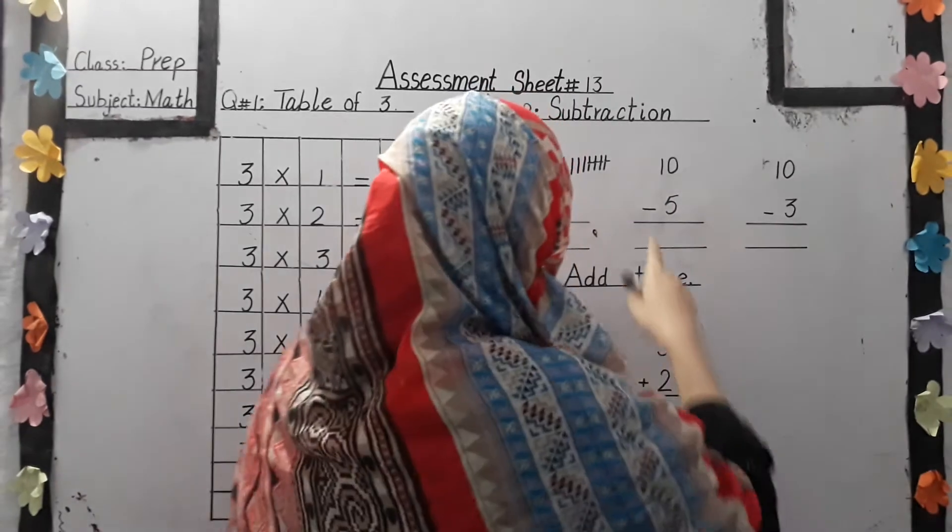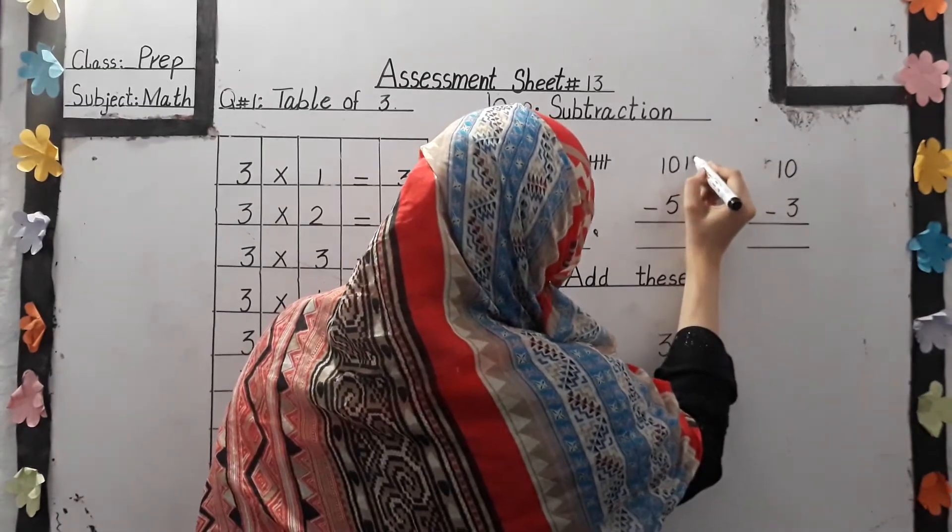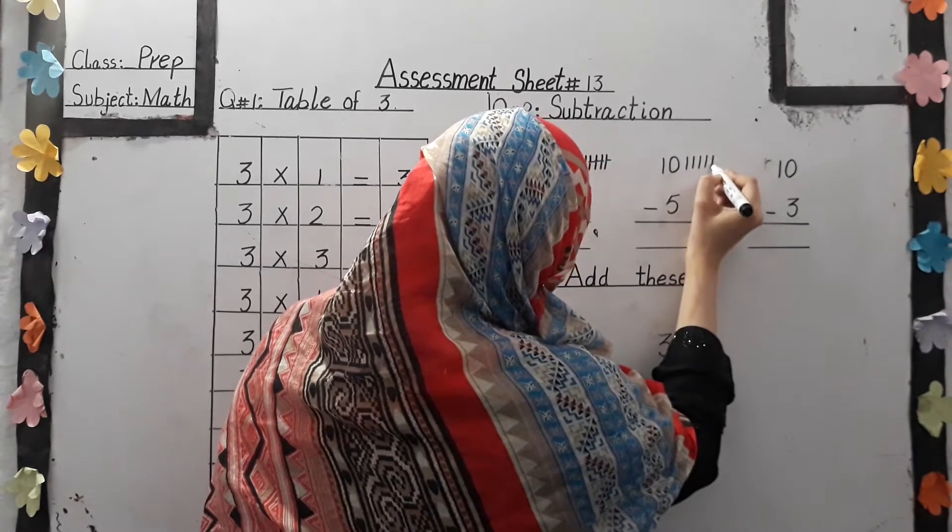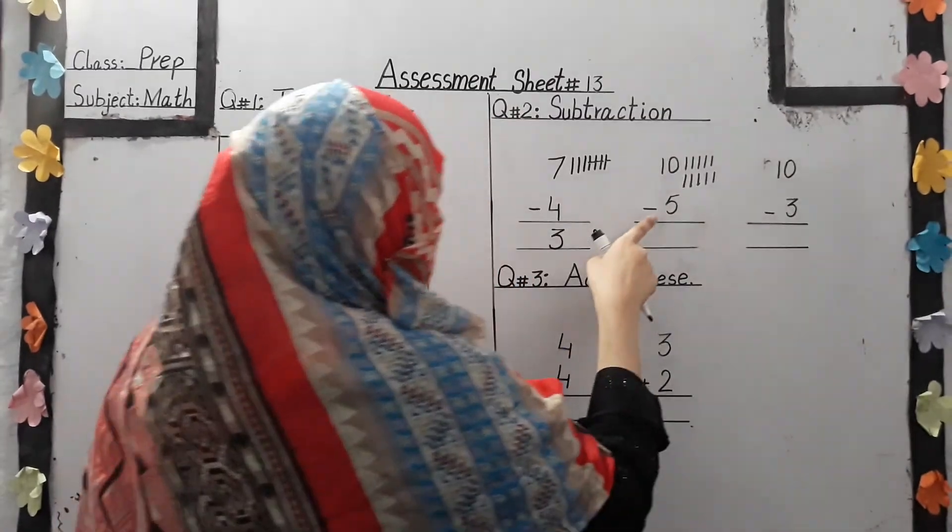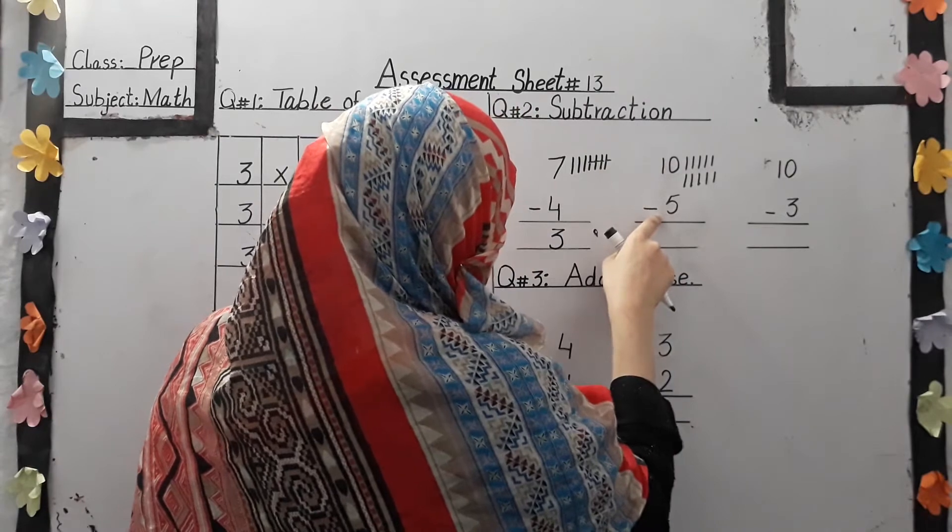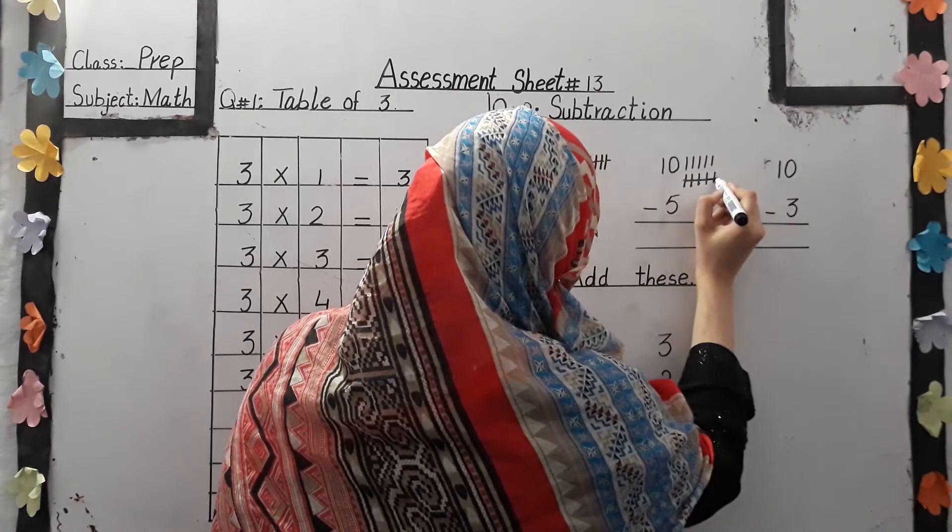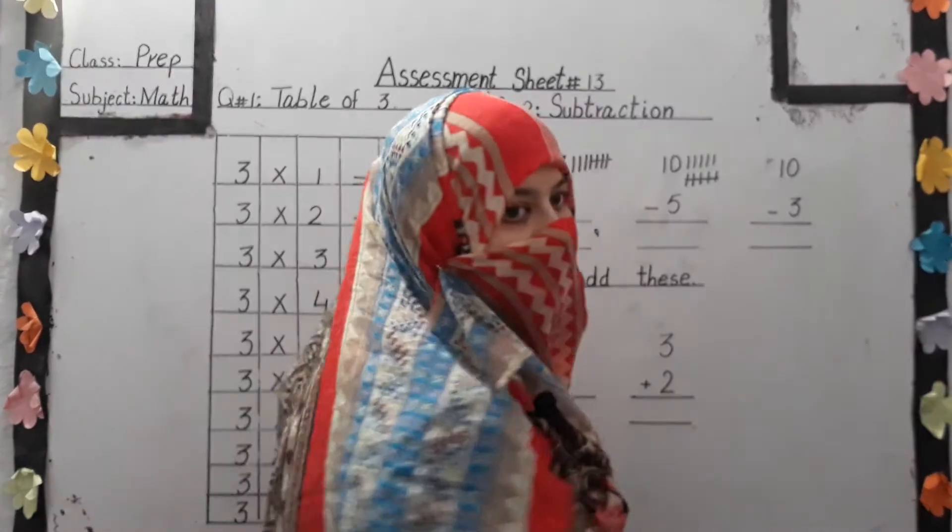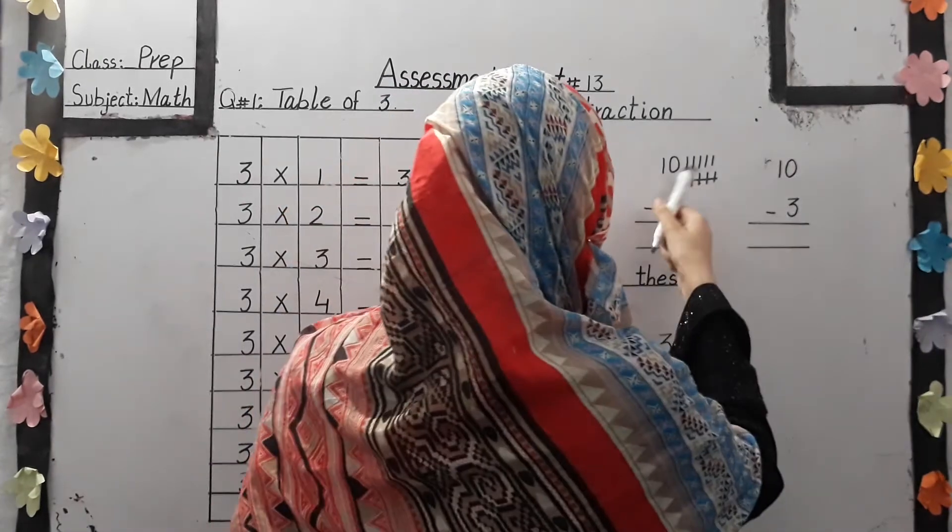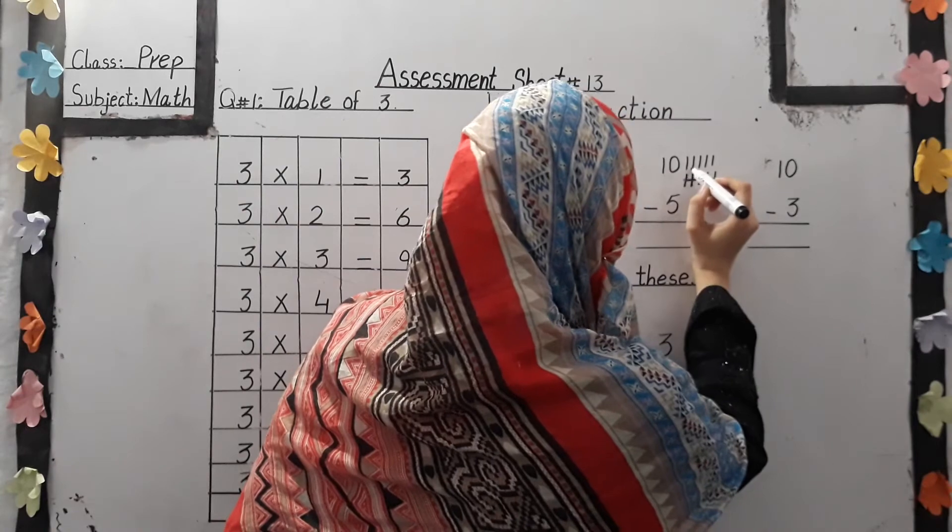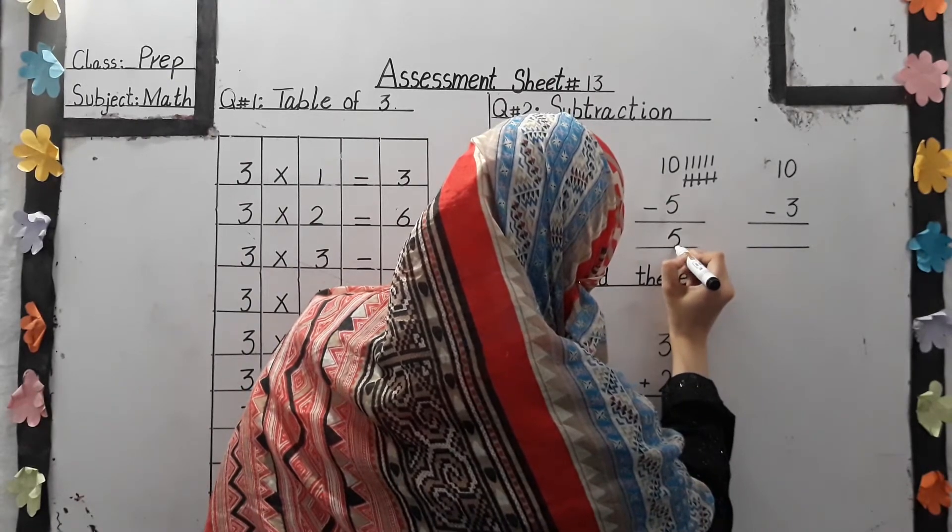Let's move to another question. What is the number? 10. We draw here 10 lines: 1, 2, 3, 4, 5, 6, 7, 8, 9, and 10. Ok students, look at the other number, 5. So we cut here 5 lines: 1, 2, 3, 4, 5. Now count remaining: 1, 2, 3, 4, 5. We write here 5. The answer is 5.